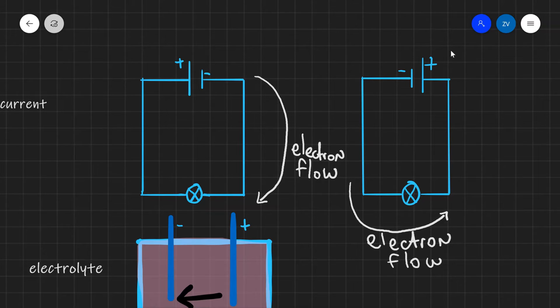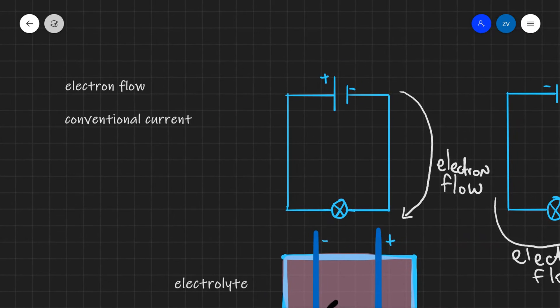We can see the trend is that electron flow is always from the negative terminal to the positive terminal. So I'm just going to write this down over here. The direction for this is negative to positive in terms of the terminals of the cell, the battery or the power supply.